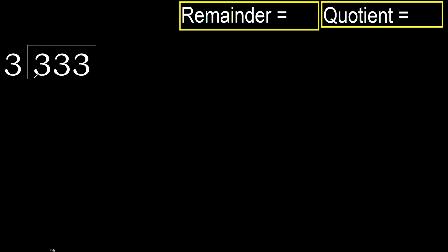333 divided by 3. 3 is not less, therefore we work with 3. 3 multiplied by which number is nearest to 3, but not greater?